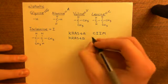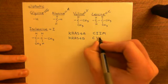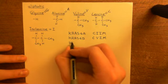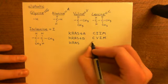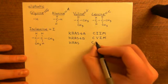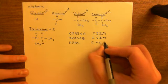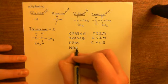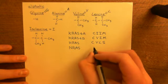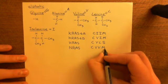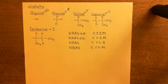Then we'll look at KRAS-4B, the other splice variant of the KRAS gene. Its CAAX box is a cysteine followed by a valine, followed by an isoleucine, followed by a methionine. The other example, HRAS — its CAAX box consists of a cysteine four-in from the terminal amino acid, then a valine and a leucine, and then finally in the final amino acid position you then have a serine.